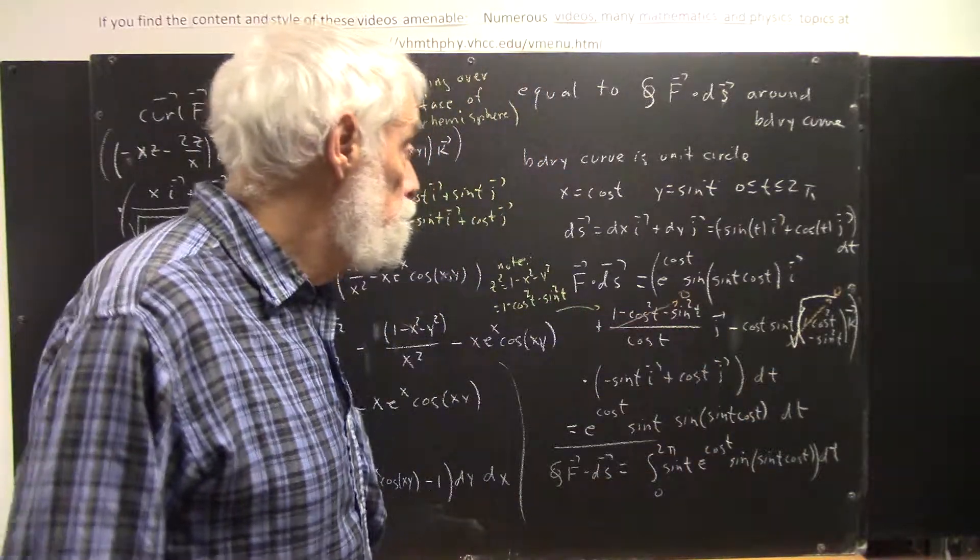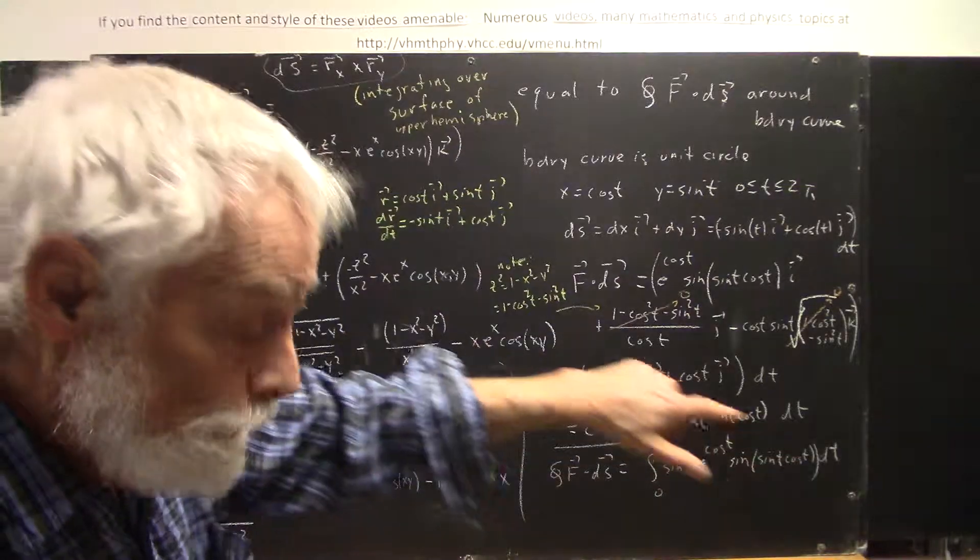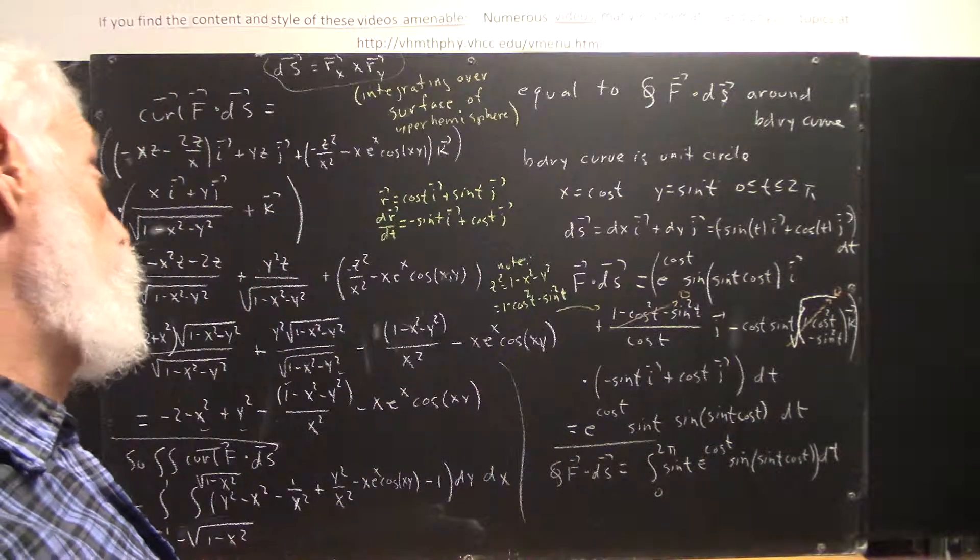Okay. So, this is familiar. We're doing a line integral, in other words. We're going to parameterize the curve by x equals cosine t, y equals sine t, t from 0 to 2 pi.